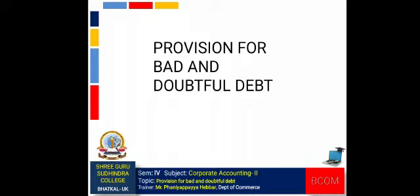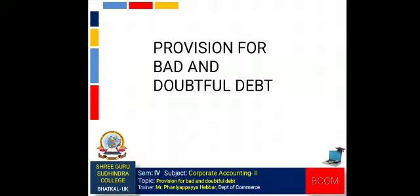In the last class we discussed the classification of assets of a banking company, that is, performing assets, non-performing assets, standard assets, substandard assets, doubtful assets, and loss assets. We also discussed the RBI guidelines which relate to provision for bad and doubtful debt, that is, the percentage of provision on different types of assets.